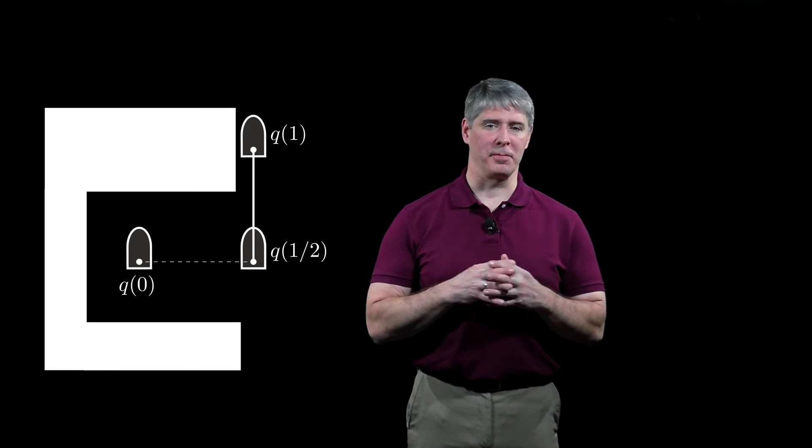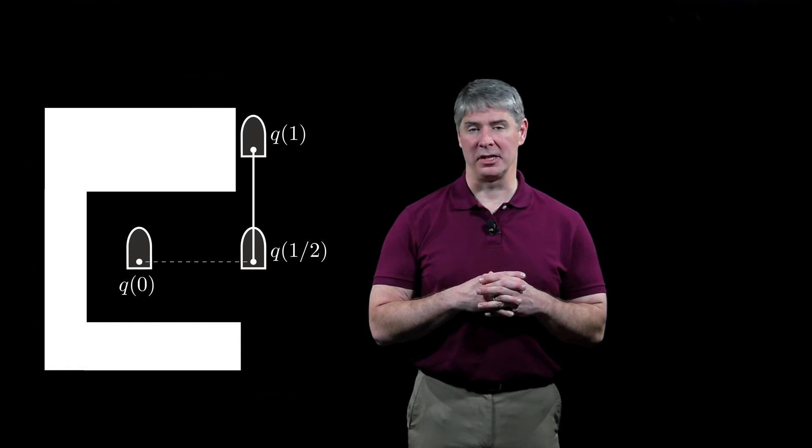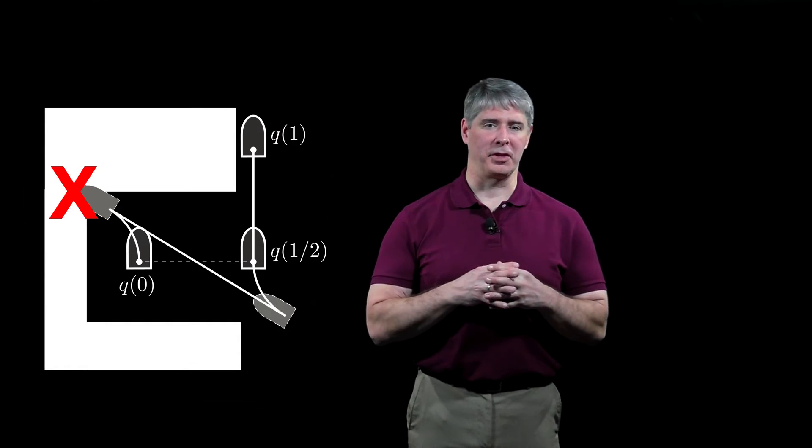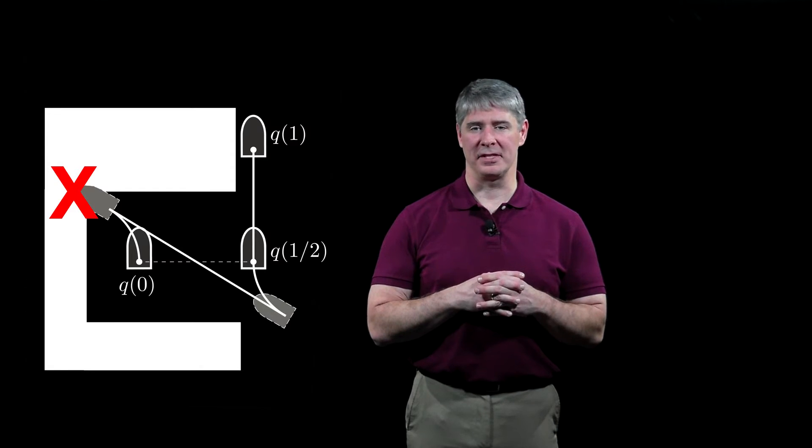The Reeds-Shep path from q1 half to q1 is collision-free, but the Reeds-Shep path from q0 to q1 half is not.